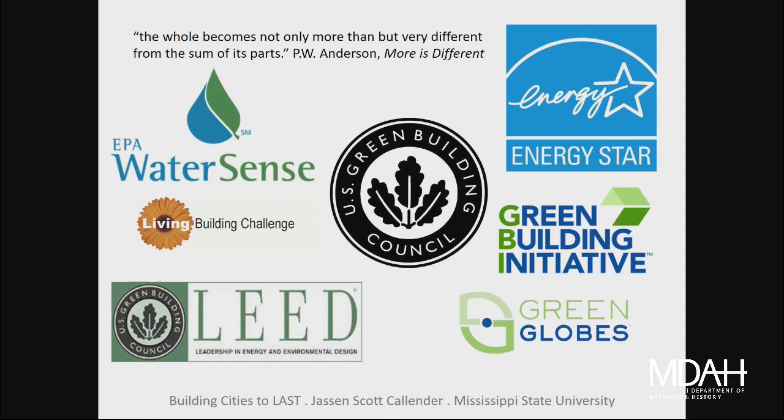To deal with the fact that we don't know what sustainability is, a lot of metrics have evolved. These are the ones most prevalent in the U.S. — if you go around the world, the number of these emblems and logos multiply. One problem with most of these metrics comes back to a quote by physicist P.W. Anderson: the whole becomes not only more than, but very different from the sum of its parts. When you take a metric approach where you just check enough boxes and you have sustainability, the assumption is that it's purely additive. The idea of synergy — how things reinforce one another — gets lost in that mix.